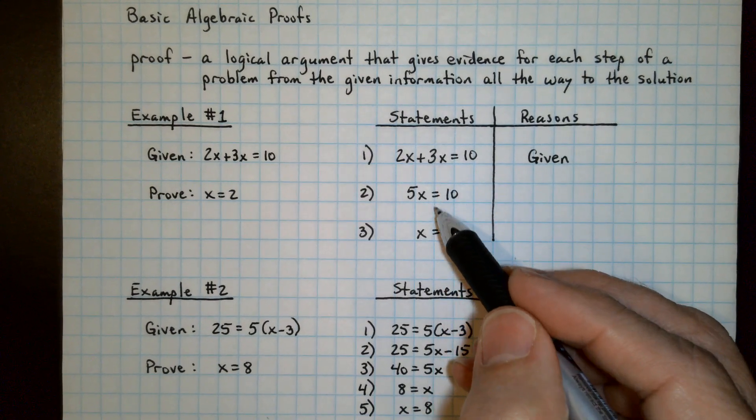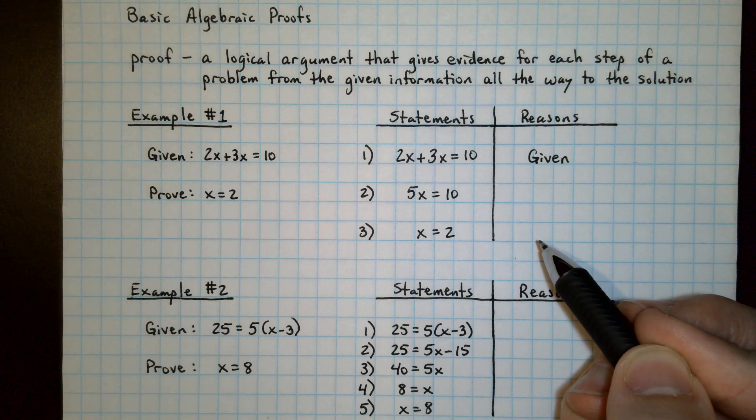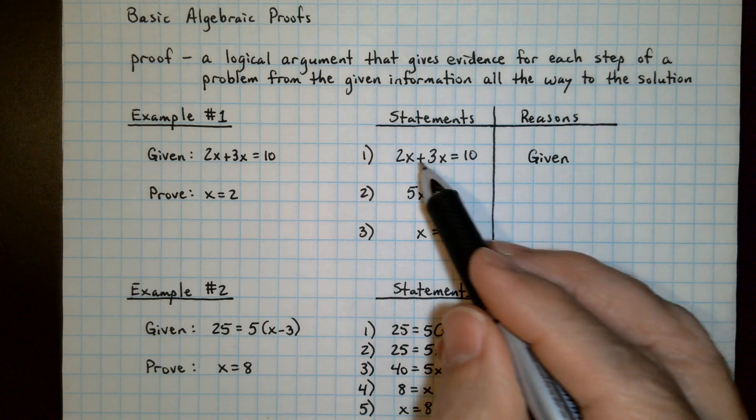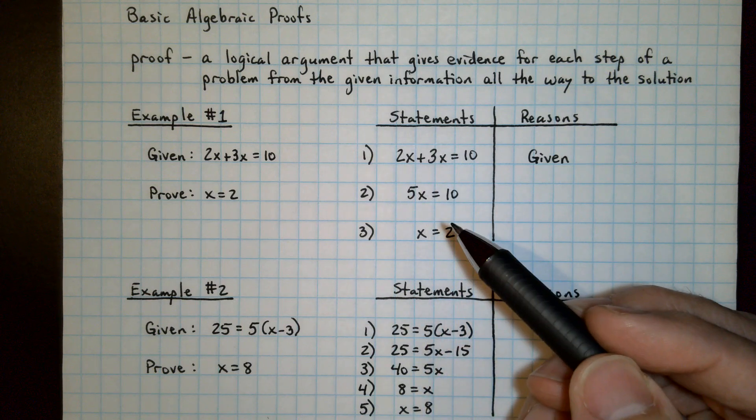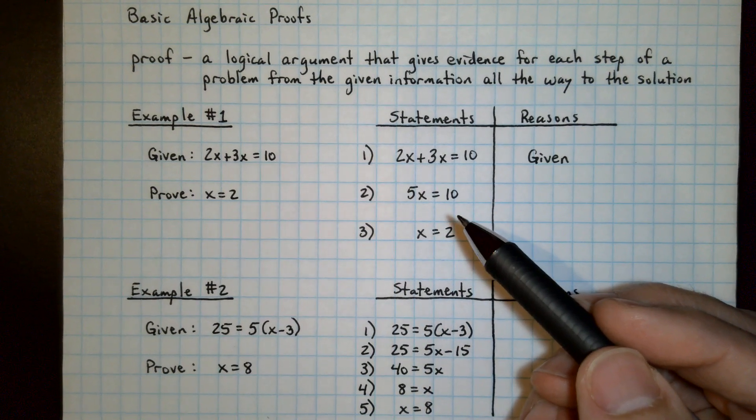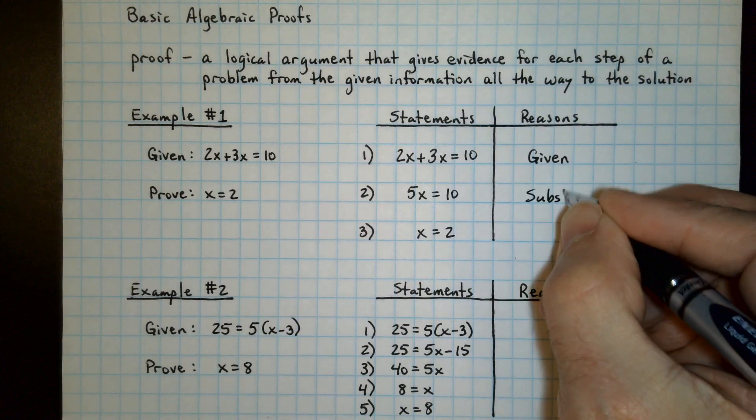And as you go through the steps of the proof, you just provide the property that either justifies it or allows you to make that step. Here we would be combining these like terms. Some people write combined like terms, some people will say simplify, but even better is the substitution property.